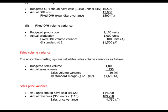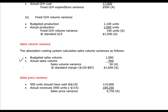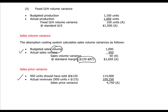Sales volume variance is pretty simple and very similar to material usage variance — we have a volume analysis and a price analysis. Volume is the budgeted sales volume compared to actual sales volume multiplied by the standard margin, not the price. Sales price variance uses actual quantities multiplied by the budgeted price compared to the actual revenues incurred.